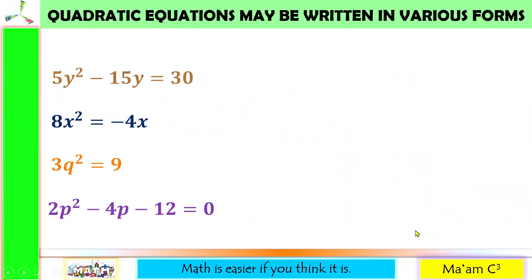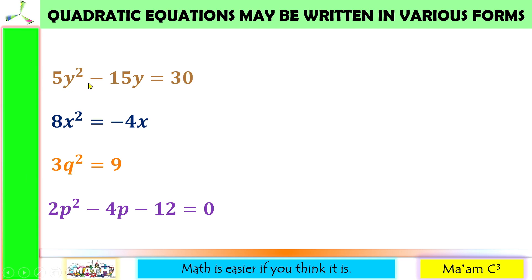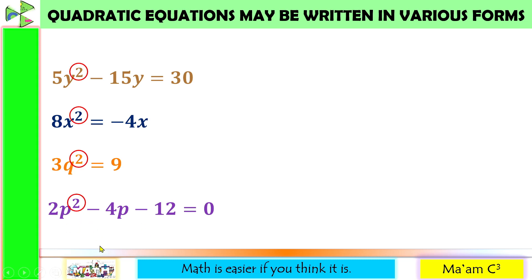Quadratic equations may be written in various forms. Let us examine the following. But first, let us make sure that these four equations are quadratic equations. Let us take a look at the degree of each equation. The degree here is 2, this one is also 2, here is also 2, and this one is also 2. Since the degree of each equation is 2, therefore these are all quadratic equations.